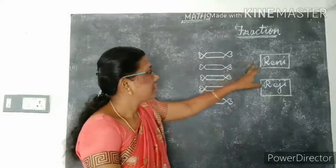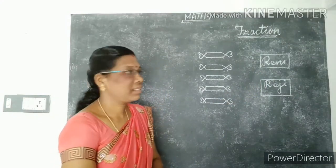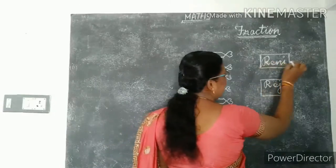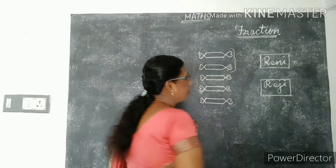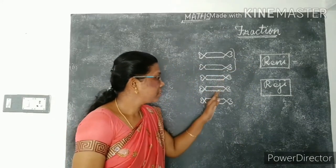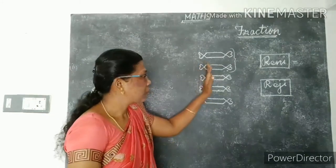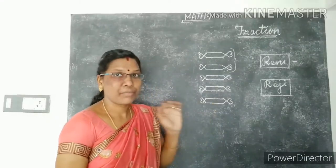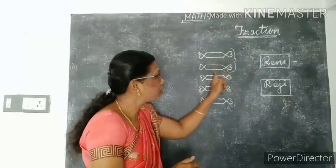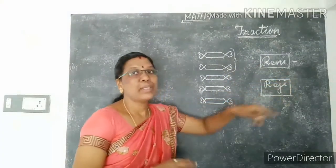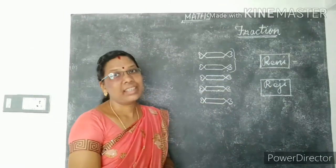She needs to give Rennie two chocolates. So she is giving two chocolates. Then Rennie, how many chocolates are there? Three. So total number of chocolates are five. From that five, she gave two chocolates to Rennie. So from that whole, some parts are given to Rennie. This is fraction.